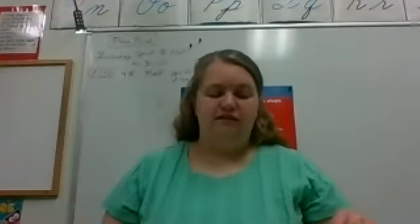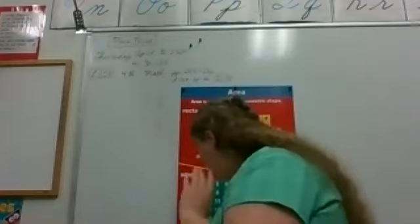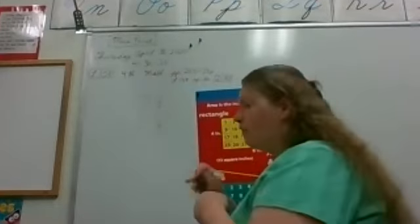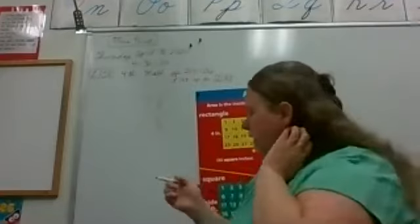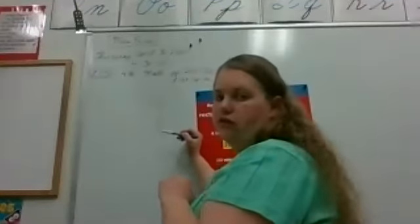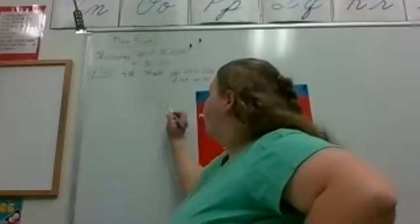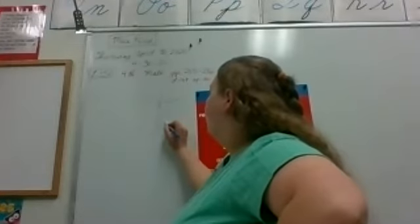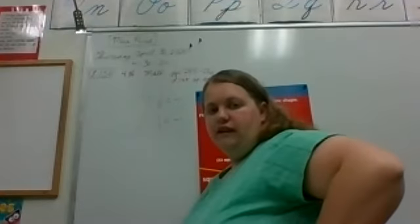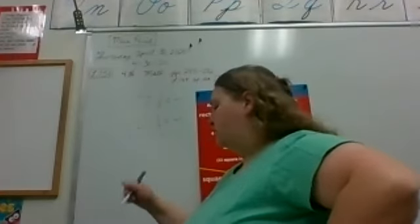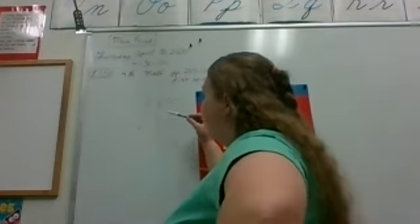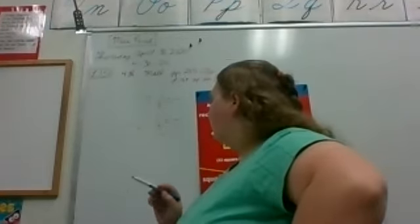All right, before I let you go to your speed drill we're going to do a problem here on the board. This is seven and one eighth minus two and one-third. We need to have a common denominator. Denominator down in the basement.